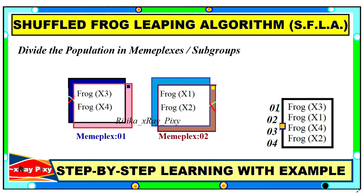After that, we divide the population into subgroups. Imagine we have two subgroups. We divide the sorted population by placing the first frog in subgroup one, the second frog in subgroup two, the third frog again in subgroup one, the fourth frog in subgroup two, and so on. We repeat this process until all frogs are assigned to the subgroups.